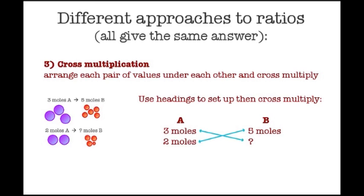Here our headings are substance A and substance B. The cross multiplication step just says that if you multiply the pairs of terms along each arm of the blue cross, they are equal to each other. In other words, three times the unknown is equal to two times five, and rearranging the equation again gives us the answer of 3.3 moles.